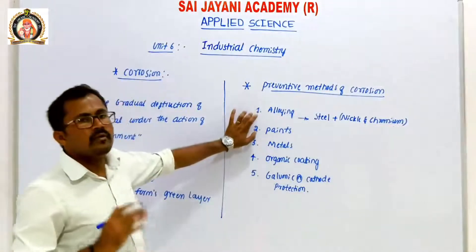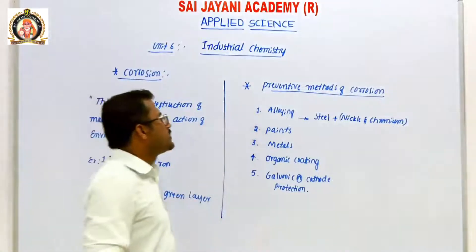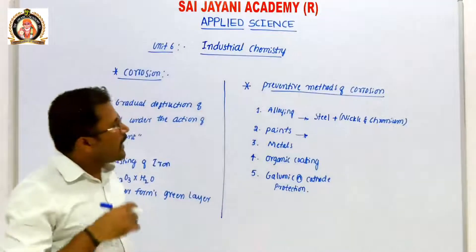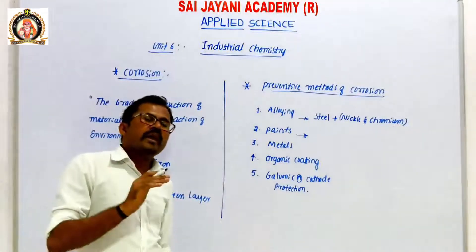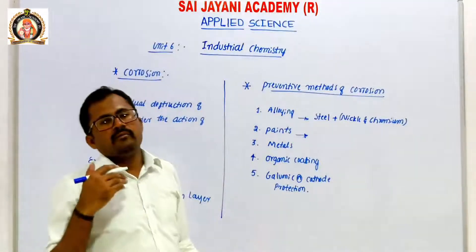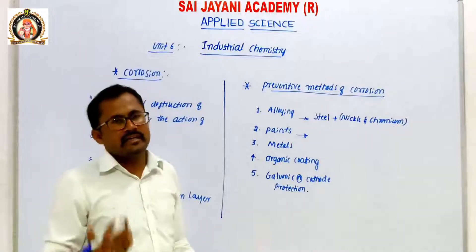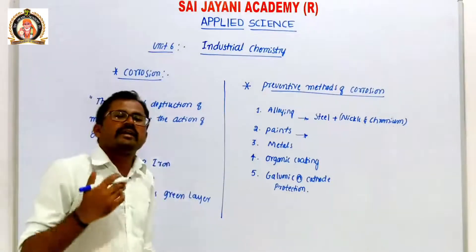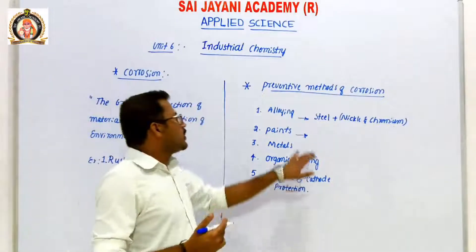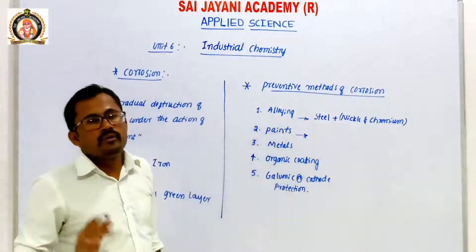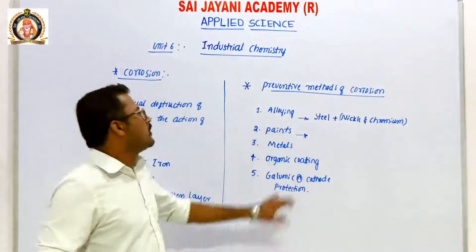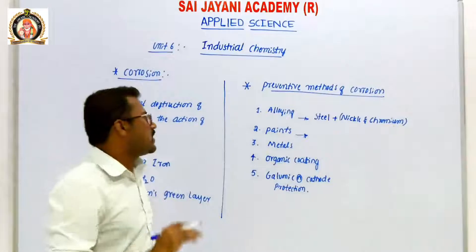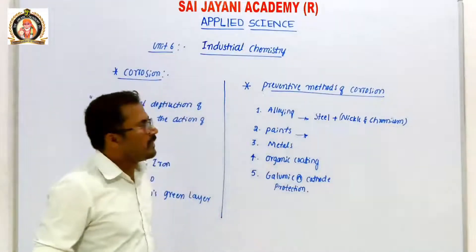Next method: Painting. Paint forms a coating so that the paint reacts with water and moisture. The component is protected and painting is used to prevent corrosion, saving the material.